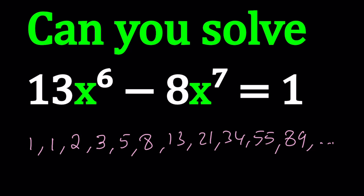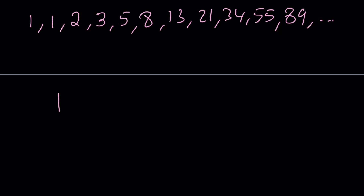This sequence is called the Fibonacci sequence, and the numbers are called Fibonacci numbers, thanks to an Italian mathematician. Now, how do you find the terms of a Fibonacci sequence? There's a huge story behind it involving a golden ratio and a golden equation. But first, let me give you the general term of a Fibonacci sequence — we'll call it F sub n, F for Fibonacci.